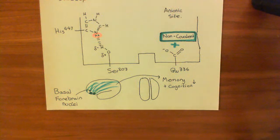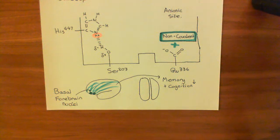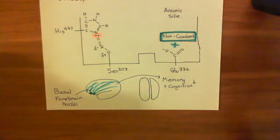In the next video, we'll move on to covalent acetylcholinesterase inhibitors, which are used to treat myasthenia gravis.